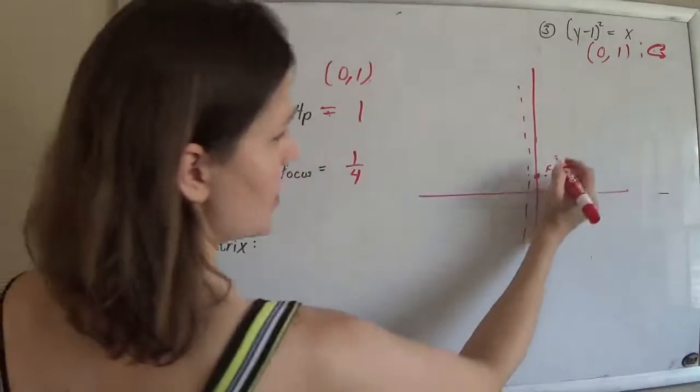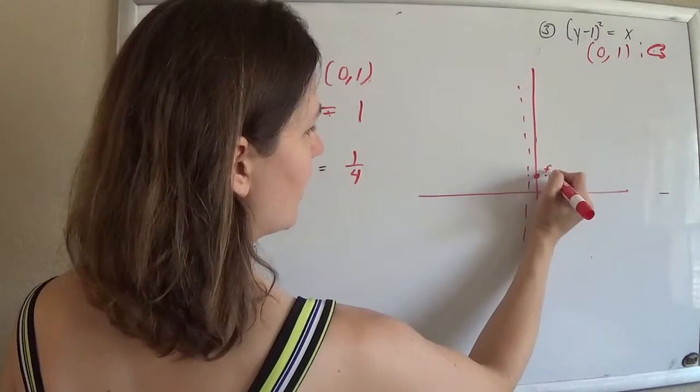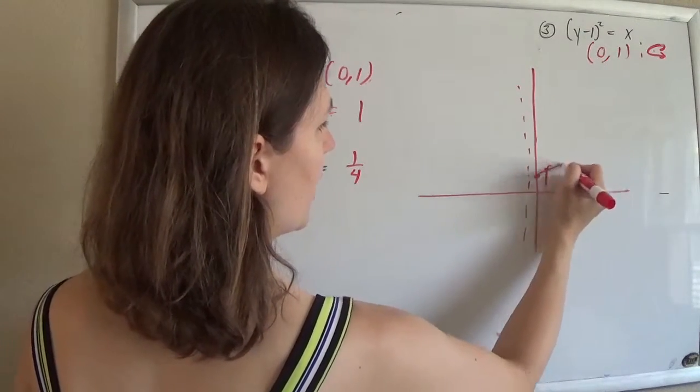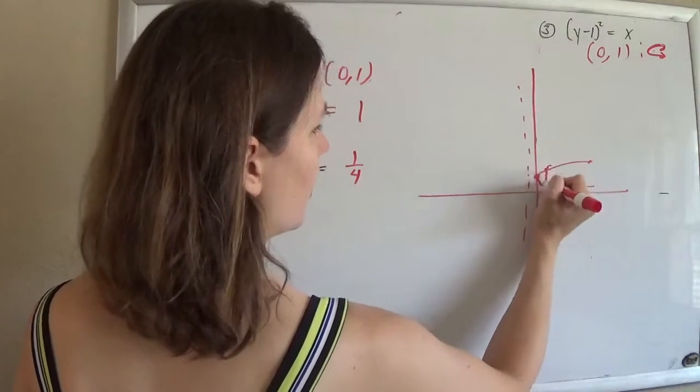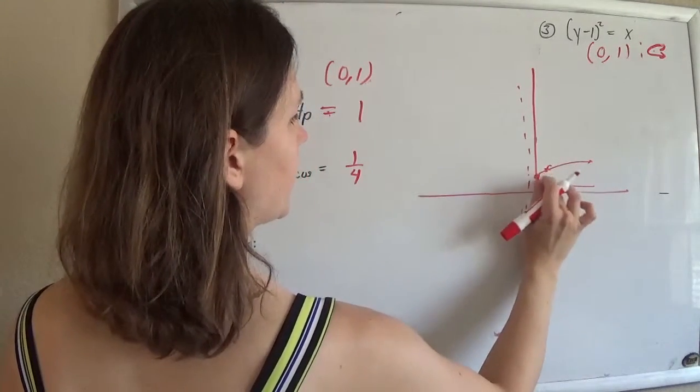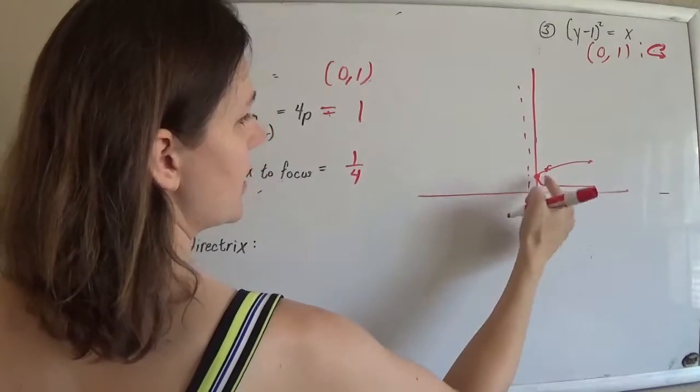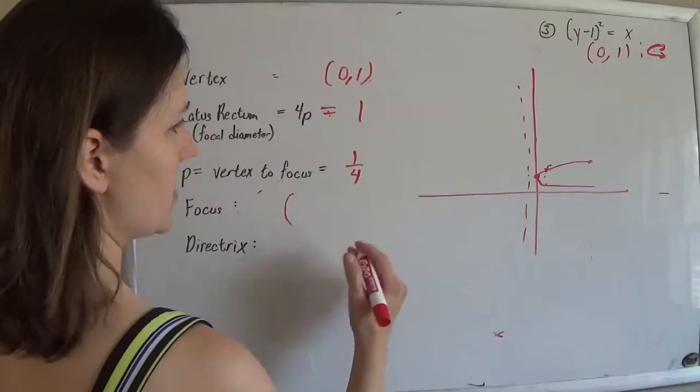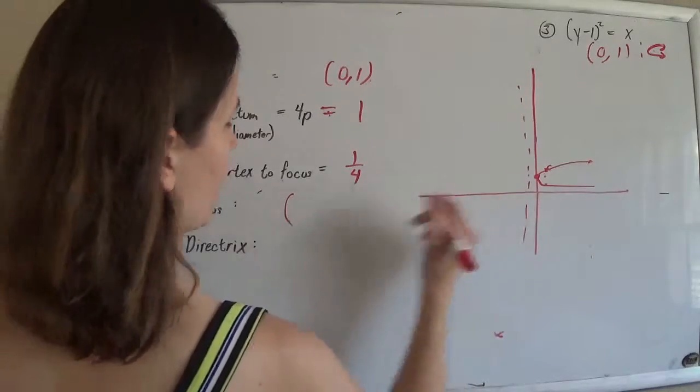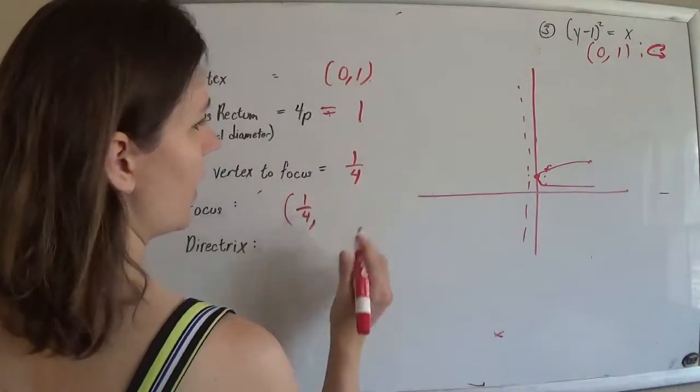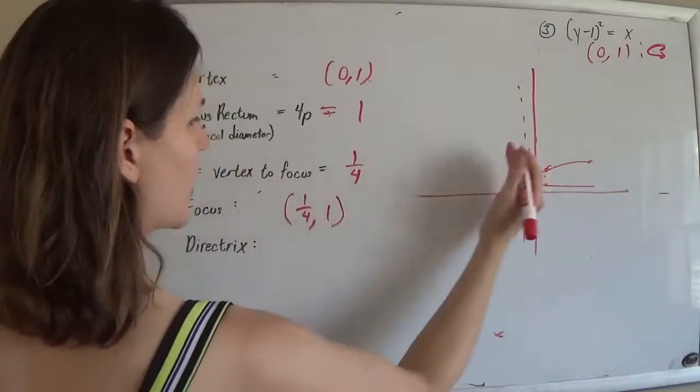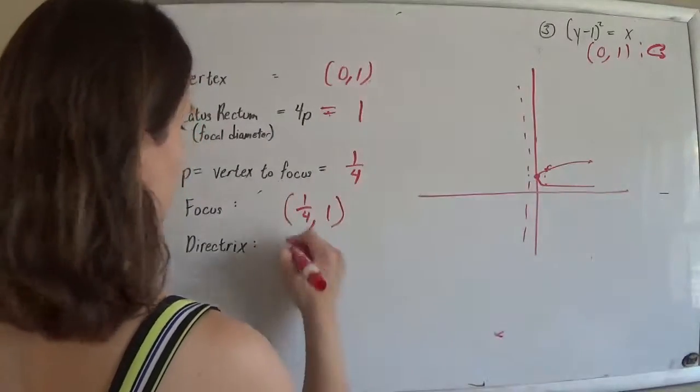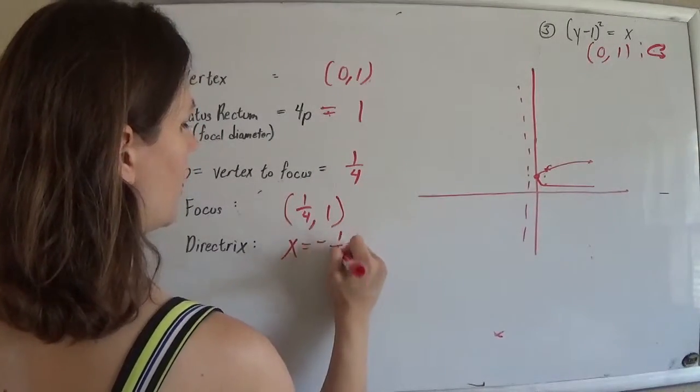And 1 fourth the other way to get my directrix. The latus rectum is 1 long, so half on either side. A very skinny parabola here. So that's 1 long there, half that way, half that way. So the focus ended up at that point there, which I can tell from my graph is 1 fourth out and 1 up.